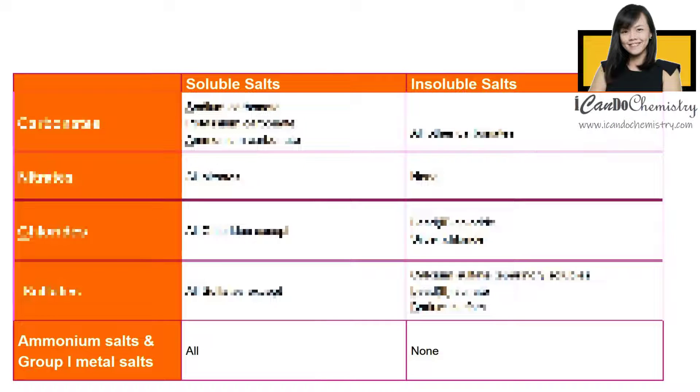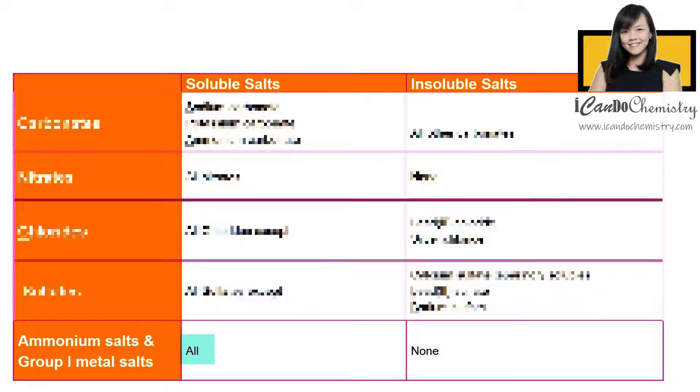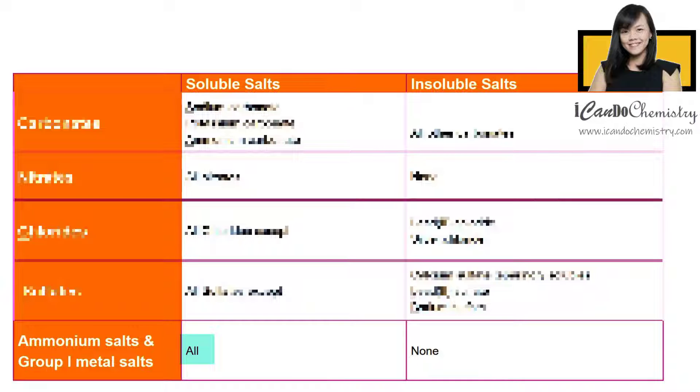Next, let's focus on group 1 metal salts and ammonium salts. Group 1 metal salts and ammonium salts are always soluble in aqueous solution.